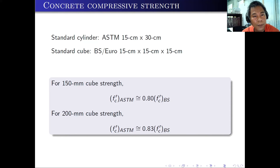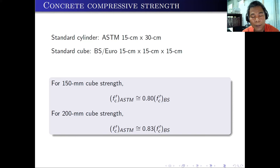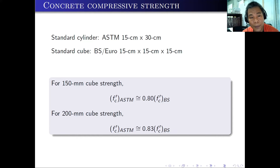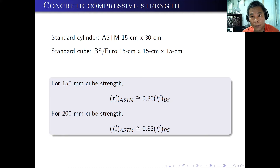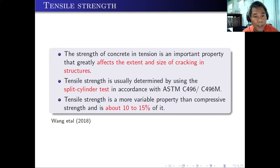Here is the comparison between the standard cylinder and the standard cube used in Europe. For the 150 mm cube strength, FC prime using ASTM is simply equal to 80% of the FC prime using the standard cube. But if you are using a 200 mm cube, then your FC prime according to ASTM is around 83% of the strength using the 200 mm cube.